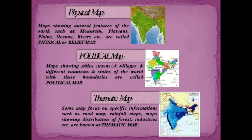Physical map: Maps showing natural features of the earth such as mountains, plateaus, plains, oceans, rivers, etc. are called physical or relief maps.